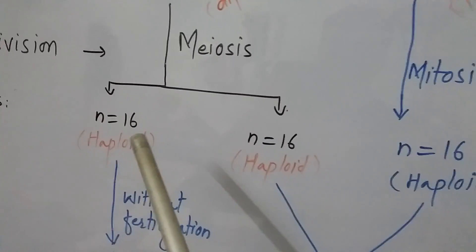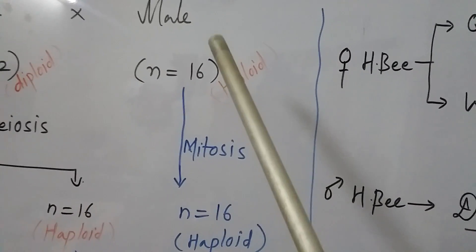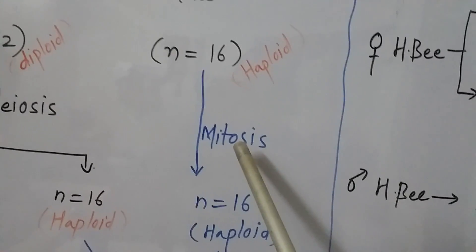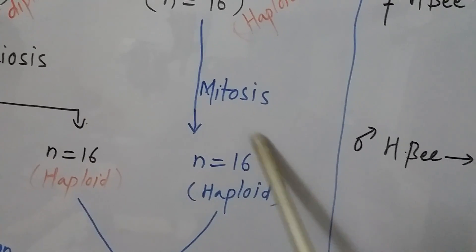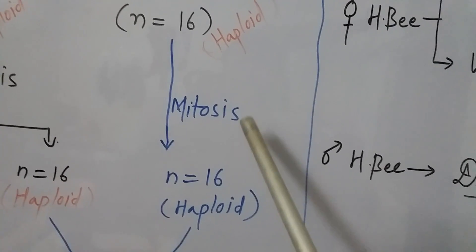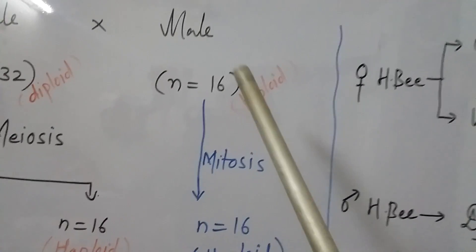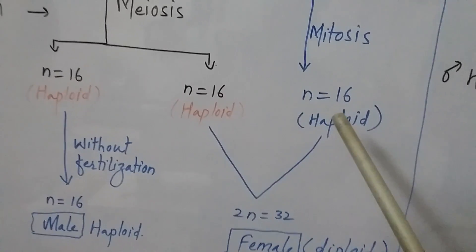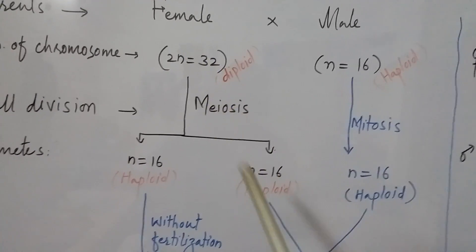The male has 16 chromosomes in itself. By the process of mitosis — not meiosis — it produces a gamete, and that gamete contains the same number of chromosomes, because mitosis is the cell division process in which the chromosome number remains the same. So the male gamete also contains 16 chromosomes. We now have three gametes: one from the male and two from the female, all haploid.